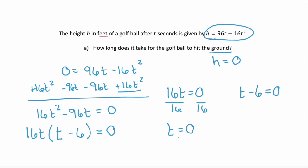Well what does t equals 0 mean? That means time is 0, or that's when the golf ball is first hit. It's when we start. Well that doesn't answer the question of how long does it take for the golf ball to hit the ground. This is when it starts, so it's already on the ground. So we're going to throw that one out.